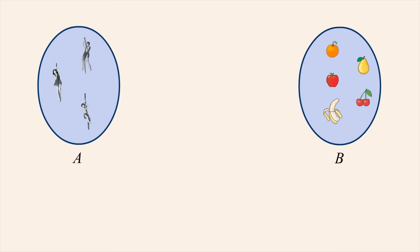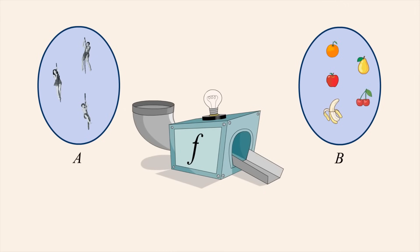A function can be thought of as a machine which, when given a member of set A as input, produces one specific member of set B as output. Since there is only one possible output for any particular input, this machine is very predictable.